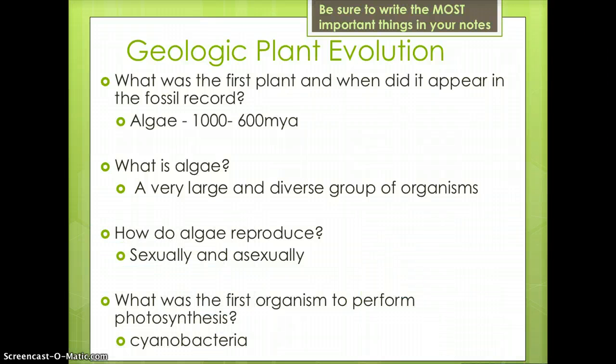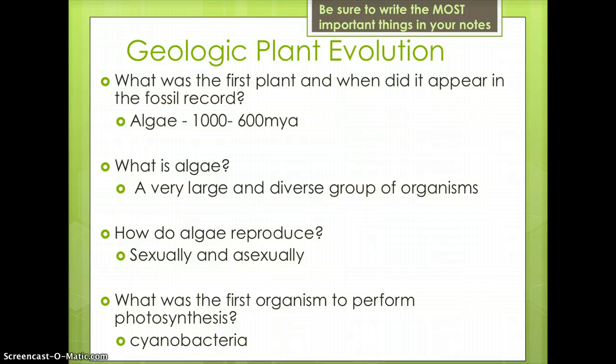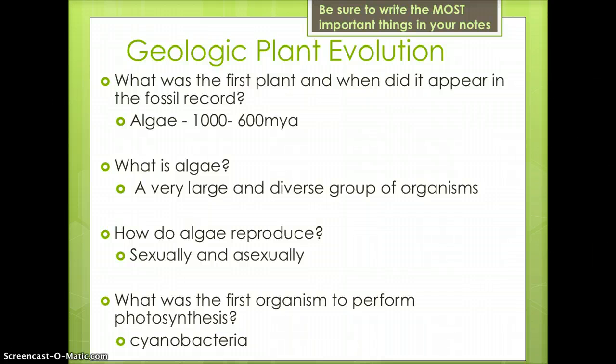Algae can reproduce both sexually and asexually. Sexual reproduction involves two organisms combining their genetic material to make a new organism, and asexual reproduction involves offspring arising from one individual. However, it is important to know that cyanobacteria, which are in the phylum bacteria, were the first organisms to produce oxygen through photosynthesis.